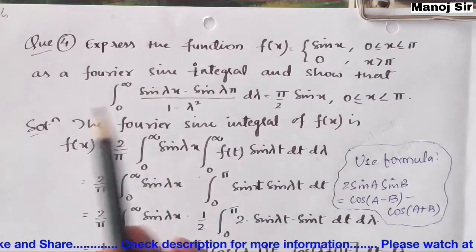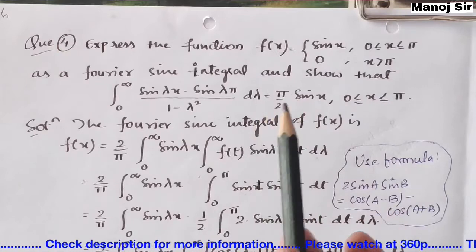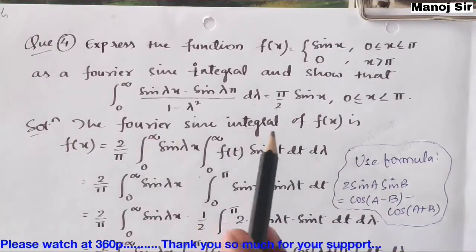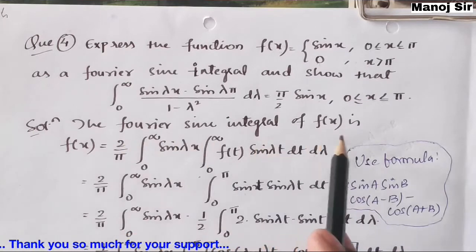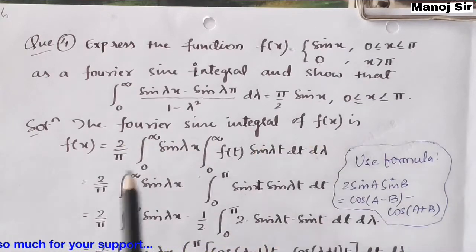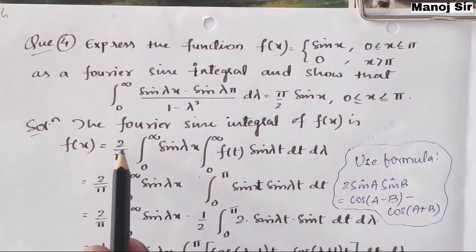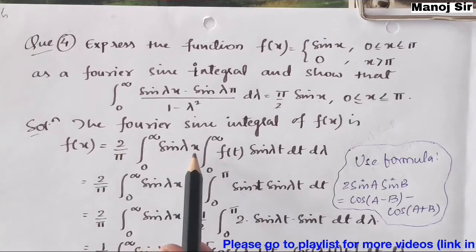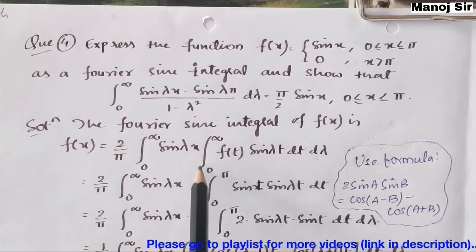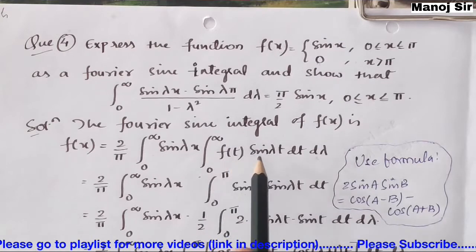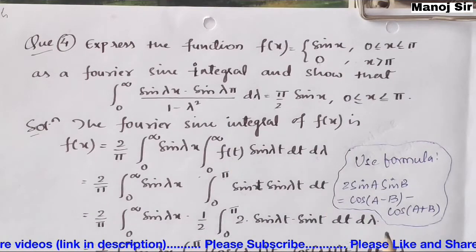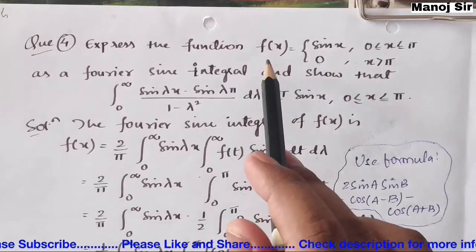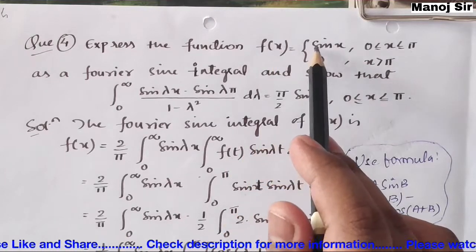Since the problem directly asks for the Fourier sine integral, without checking whether the function is even or odd we directly apply the formula: f(x) = (2/π) ∫₀^∞ sin(λx) [∫₀^∞ f(t) sin(λt) dt] dλ.